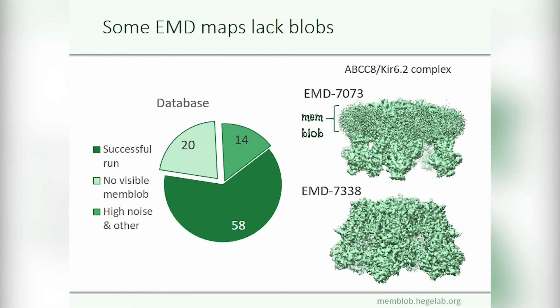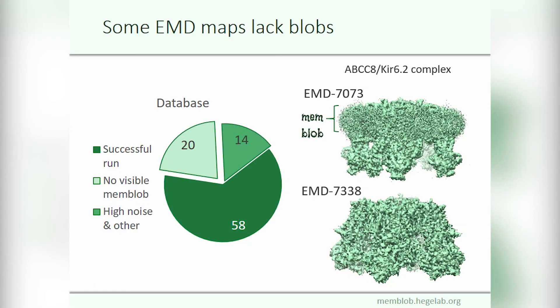Here are two structures of the same protein showing an example of a missing membrane blob. One structure was solved in a membrane environment called a micelle and the other was solved in amphipol. You can see that this one doesn't have any densities around it. We investigated whether there is any correlation between the visibility of the membrane environment and the type of it, and we didn't find any.